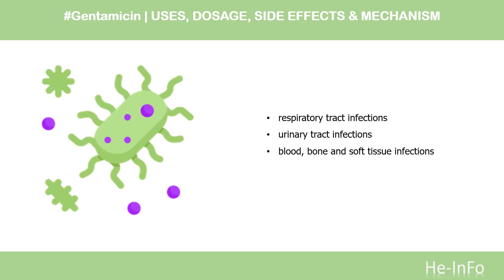What is gentamicin used for? Gentamicin is used in the treatment of respiratory tract infections, urinary tract infections, blood, bone, and soft tissue infections caused by susceptible bacteria.